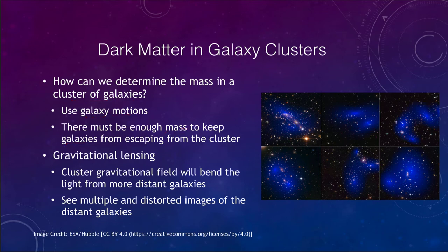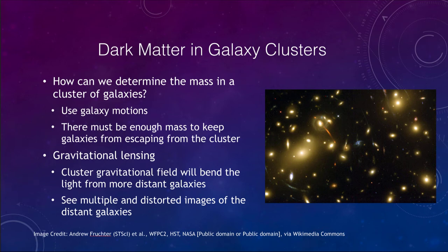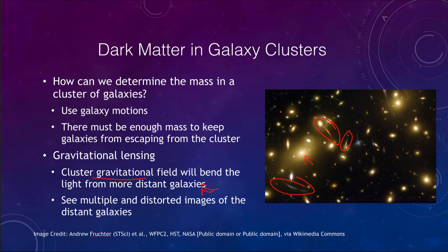Another way we can see this is through gravitational lensing. Gravitational lensing is a bending of light due to the predictions of Einstein's relativity, and the cluster's gravitational field will bend the light from more distant galaxies. Distinct galaxies behind the cluster give us multiple and distorted images, distorted by the light not only of one big galaxy but of all the other galaxies around it plus any dark matter that is present. Dark matter, while it does not contribute to the light of the galaxy cluster, does contribute to its mass.